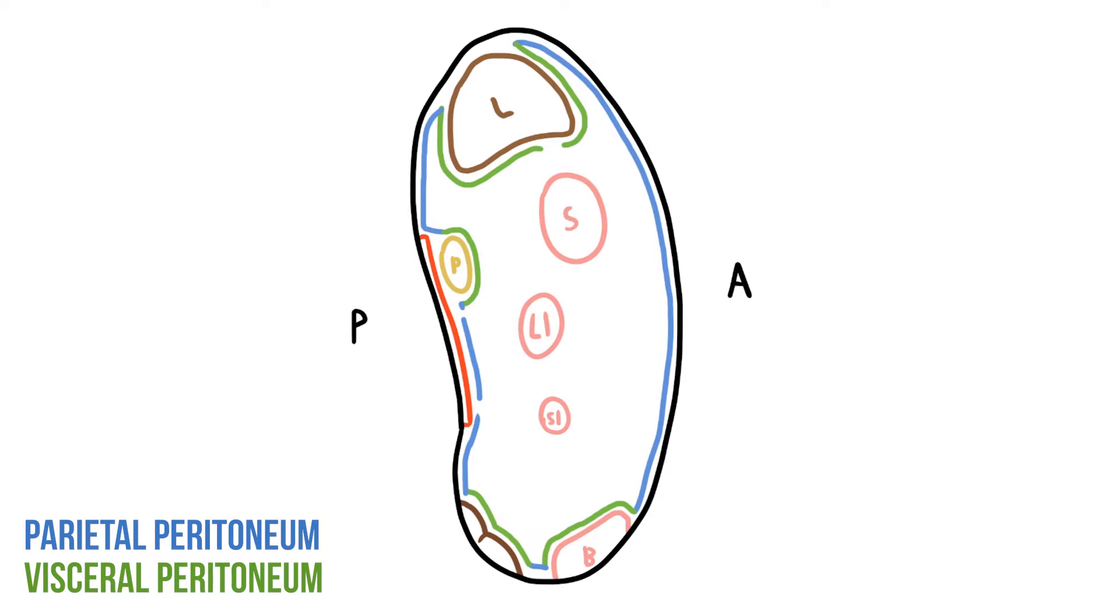Some of the organs lie close to the body wall so it's easy for that peritoneum to cover them. But what about those structures in the middle of the abdominal cavity? Well, to reach these, the membranes have to leave the body wall before almost completely enveloping the organ. This creates a double layered membrane that tethers the organ to the body wall as well as providing a route for blood vessels and lymphatic drainage.